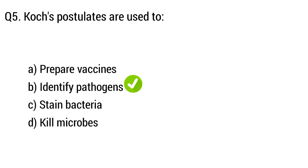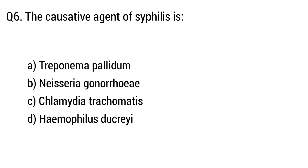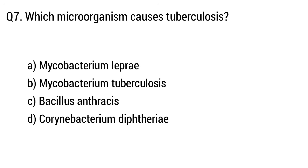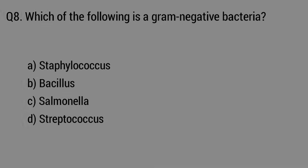Question 5: Coagulase is used to? The right answer is option B, identify pathogens. Question 6: The causative agent of syphilis is? The right answer is option — Treponema pallidum.